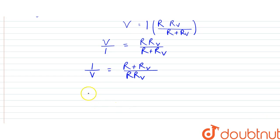1/R can be written as I by V minus 1 by R_A minus 1 by R_V.